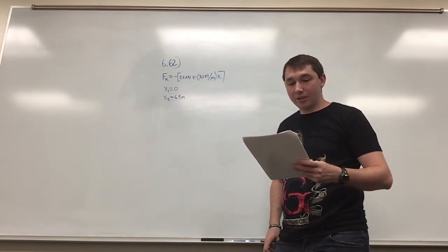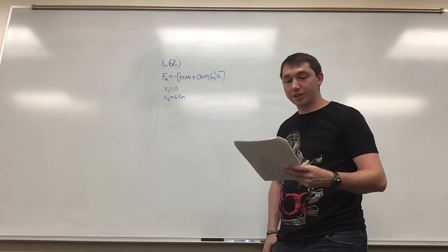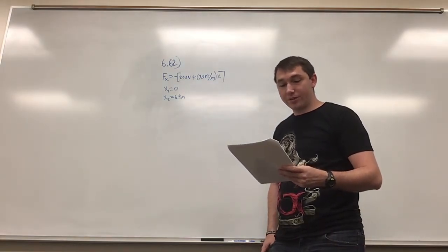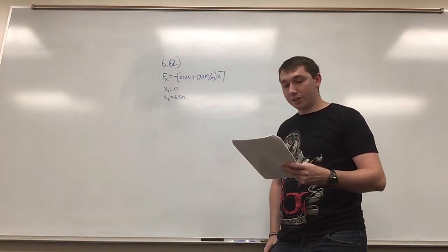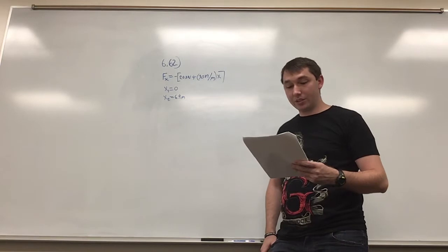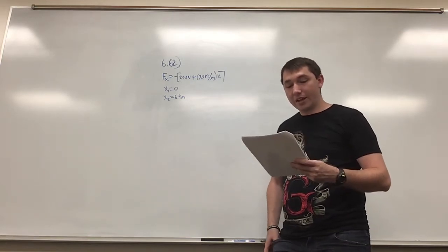A balking cow is leaving the barn as you try harder and harder to push her back in. With coordinates at the origin of the barn door, the cow walks from x equals 0 to x equals 6.9 meters.